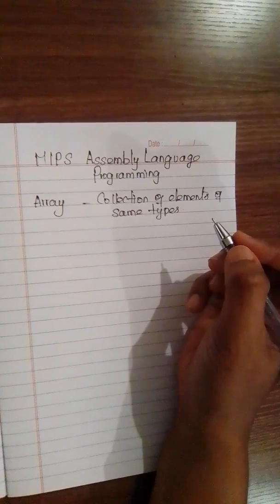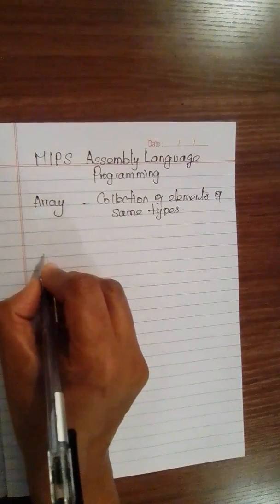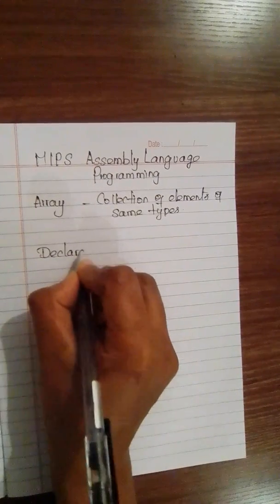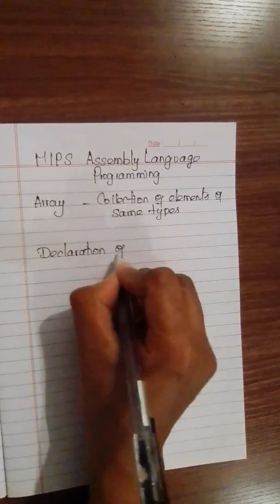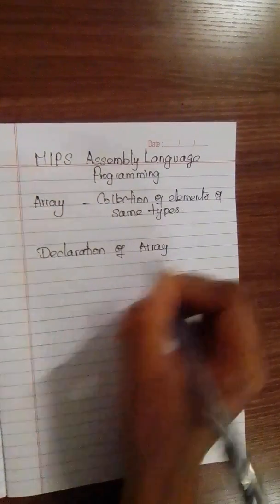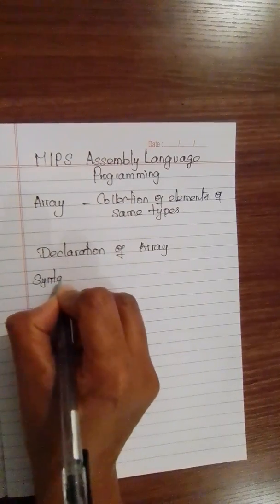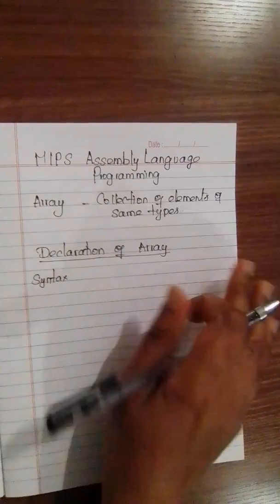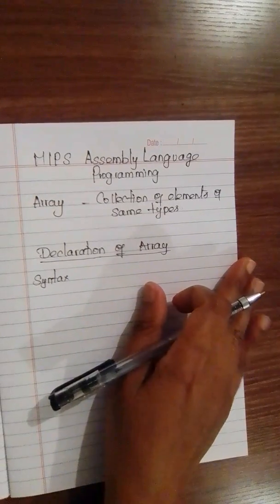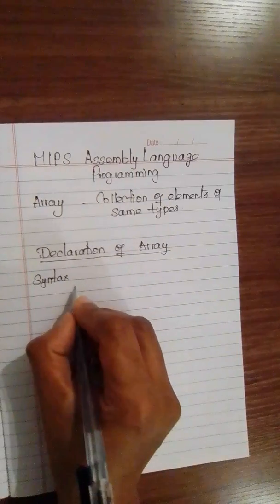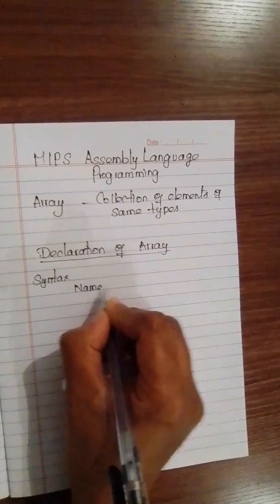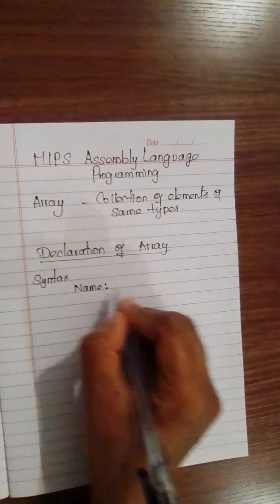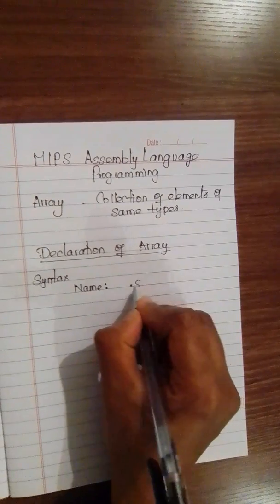First we will start with how to declare an array and how to initialize an array. Let's see the syntax of declaration of an array of integers. You need to write the name of the array — give a name to the array. Normally the variable name ends with a colon, and then you write the storage type.